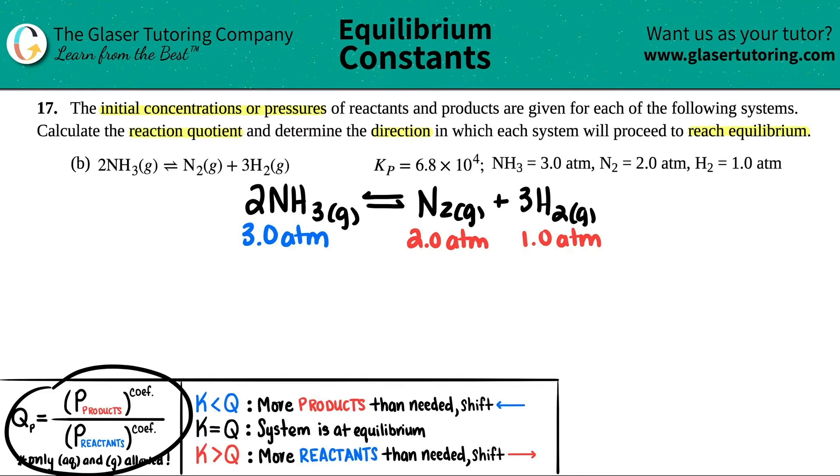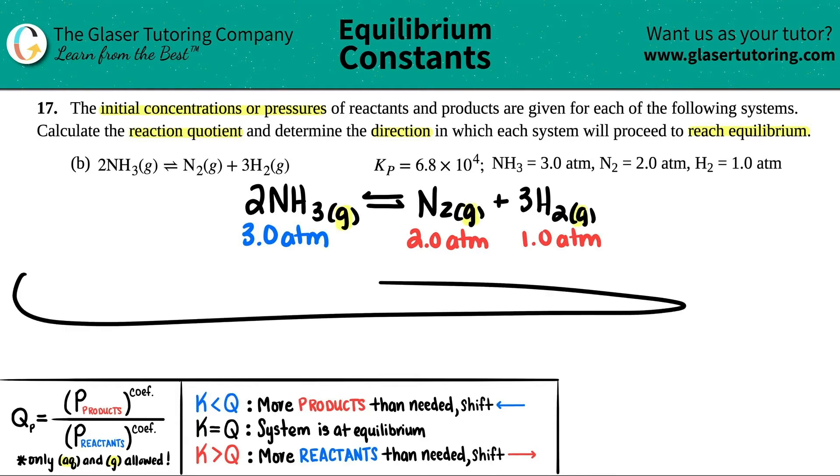I wrote the formula down here. It's essentially the same as Qc but it's just different notation. Instead of brackets which we see in the Qc formula, we just use these P's. But it's basically the same thing: products divided by reactants. Only aqueous and gases are allowed in this formula, but I see gas, gas, and gas, so they're all good.